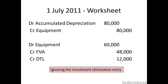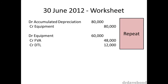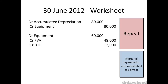For simplicity, the investment elimination entry is ignored, but it obviously would still happen. Let's now look at what happens on the 30th of June 2012, or one year after the date of acquisition. As the consolidation worksheet starts from scratch each year, we need to repeat the fair value adjustment. However, we also need to take into account the marginal depreciation effect.